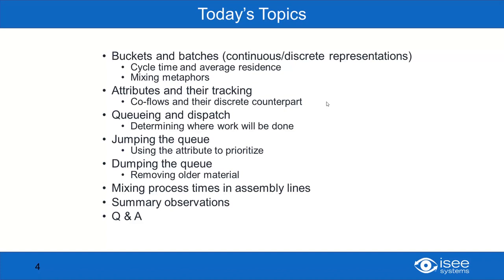We're going to do buckets and batches — the continuous versus discrete representations of systems and how they relate to one another. I'll start with a simple cycle time example and then move on to attributes and queuing and dispatch, where work will be done, jumping the queue, using attributes to prioritize, dumping the queue, removing older material from queues, and then mixing process time and assembly lines. Finally, I'll make some summary observations and we'll have a question and answer period.